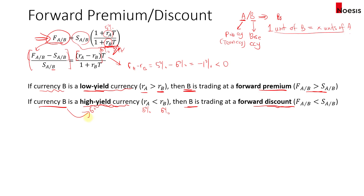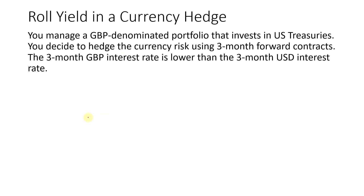Let's say you manage a pound-denominated portfolio that invests in US Treasuries, and as the portfolio manager, you decide to hedge the currency risk using a three-month forward contract. The three-month pound interest rate is lower than the three-month US dollar interest rate. So in this case, your domestic currency is pound (DC), and your foreign currency is US dollar (FC), because ultimately whatever you liquidate, you will convert back to pound.